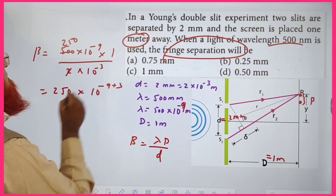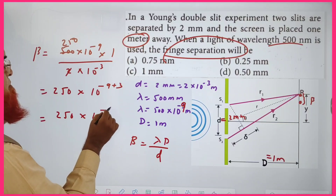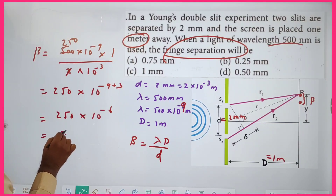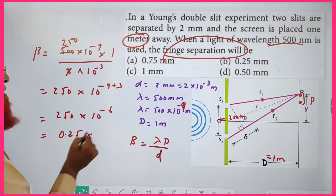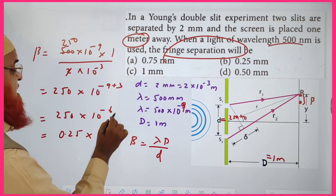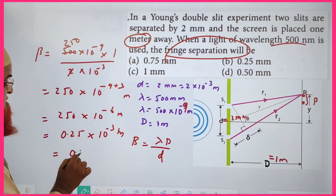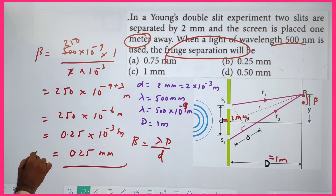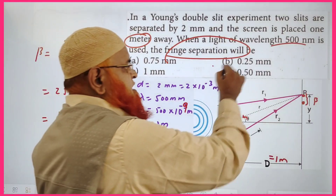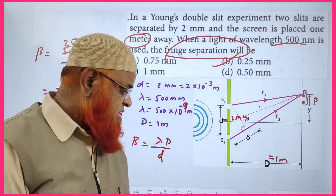Using β = λD/d: substituting gives β = (500×10⁻⁹ × 1)/(2×10⁻³) = 250×10⁻⁶ m = 0.25 mm. So the fringe separation is 0.25 mm.